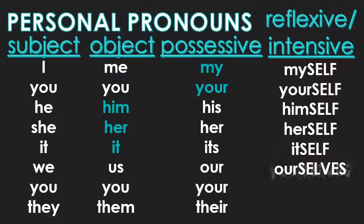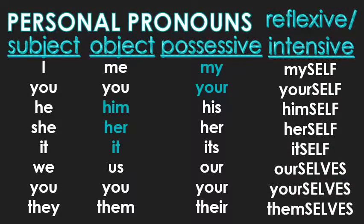In the plural — let me refresh your memory — the F turns into a V. For example, the word 'wolf' becomes 'wolves.' Same thing here: 'self' becomes 'selves.' So you want to make both parts of the pronoun plural. 'My' becomes 'our,' but 'self' also becomes 'selves,' so make sure that both sides match.